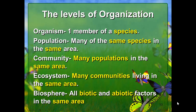Now we're going to talk about levels of organization. Organization is one of the characteristics of life. At the top you have an organism — one member of a species. The next level is population: many of the same species in the same area. For example, one lion is an organism — it's one member of a species.